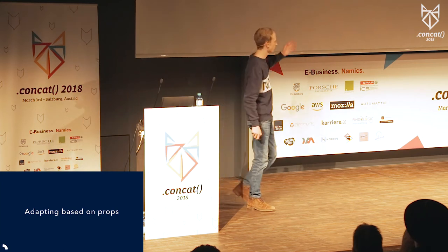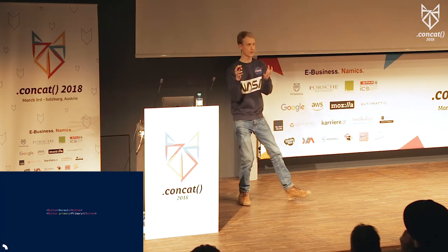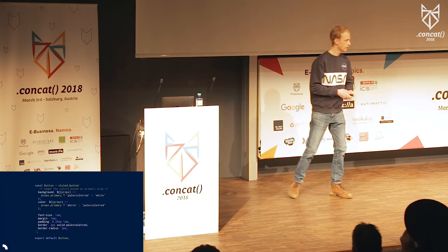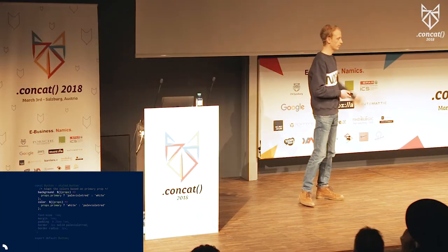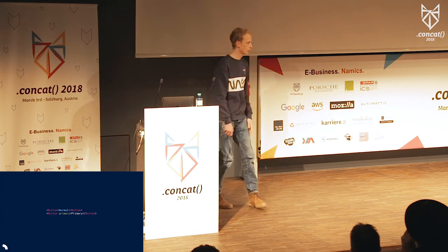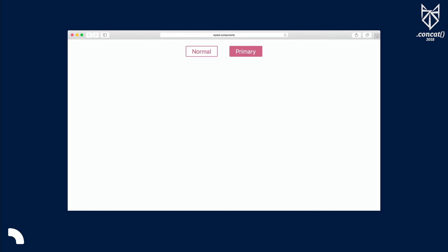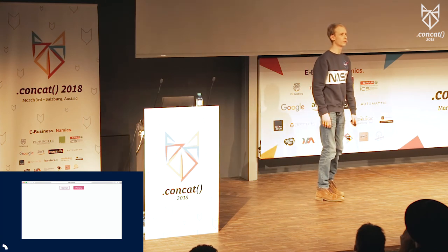Then comes the adapting based on props part. We had this button component where you want a standard button and a primary button for more important actions. With styled-components you can change your background color and color based on the property passed to the component. Our button will have a background of pale violet red and color of white if it's primary, and inverted if it's not. When you render a primary button and a normal button, the browser shows exactly that. This allows us to create component APIs that are very natural to React — passing a primary prop to a button is standard, and as the user of the component you don't have to care what it does internally.